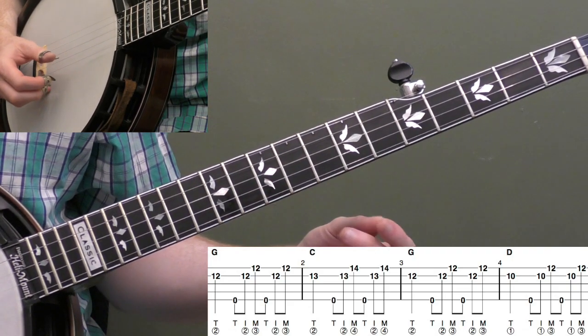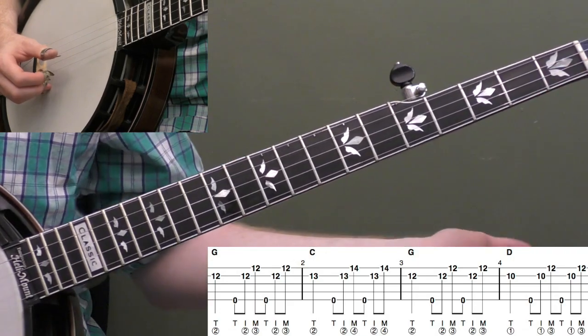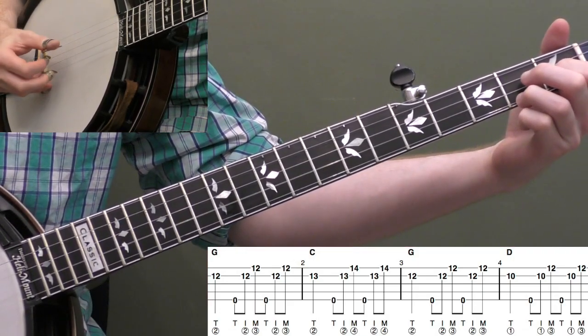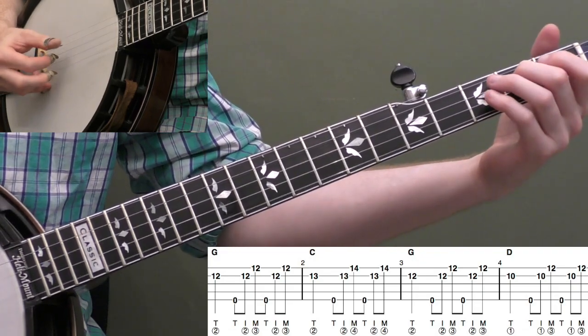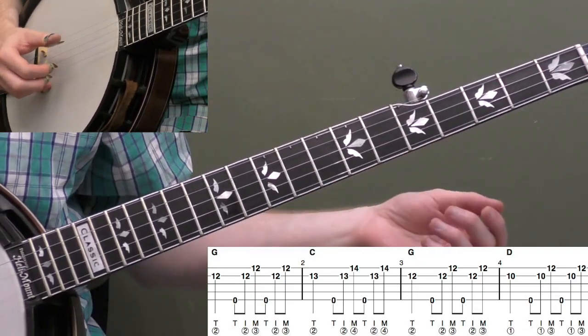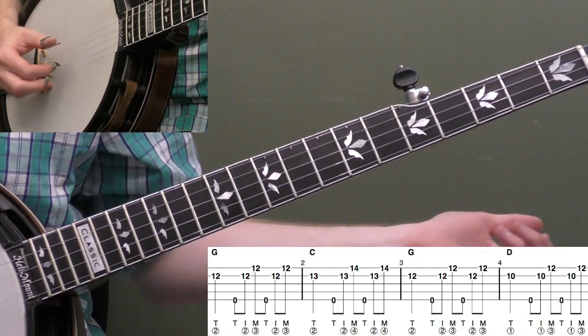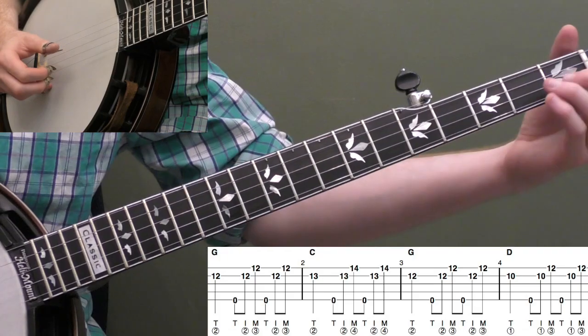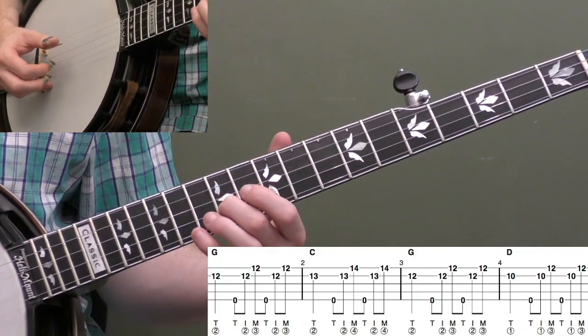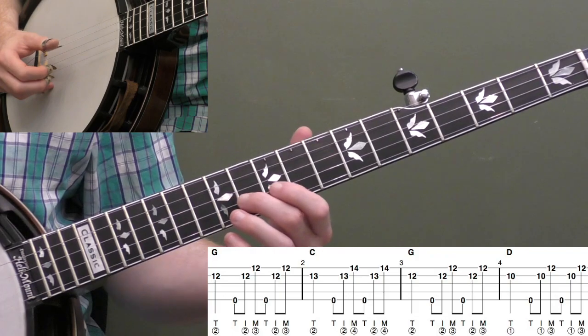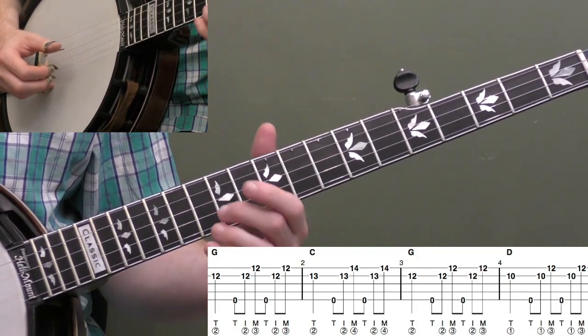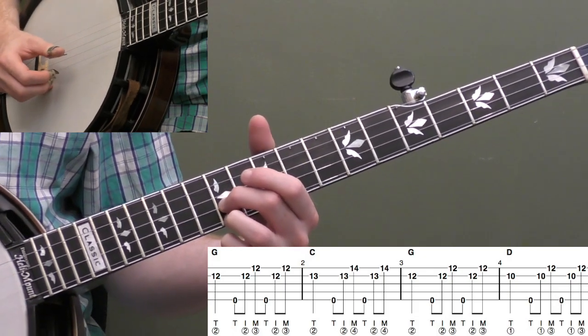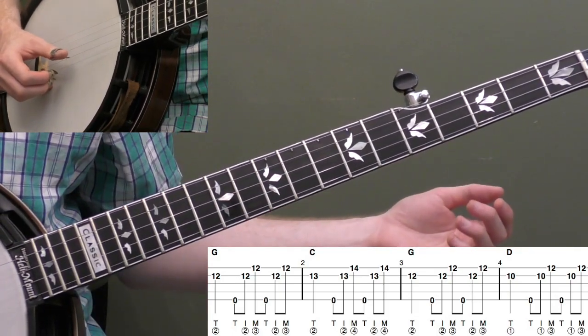Our first version, we're basically going to take the most simple version we played down the neck and find those notes up the neck. Our melody started down the neck with the open second string. We're going to find that note up an octave at the 12th fret on the second string, and then use our middle finger of our left hand and our third finger up on the 12th fret of the first string and play that exact same roll, the forward roll.